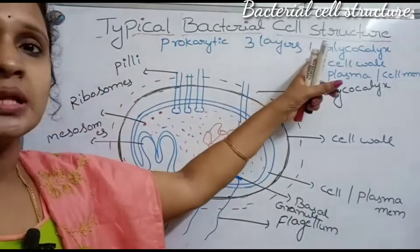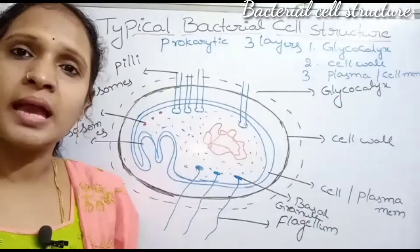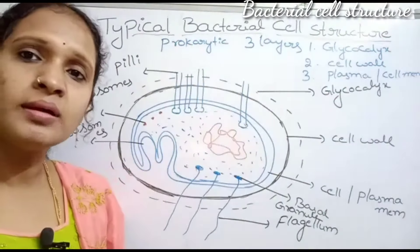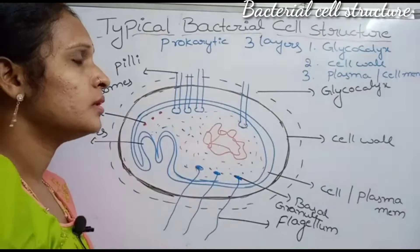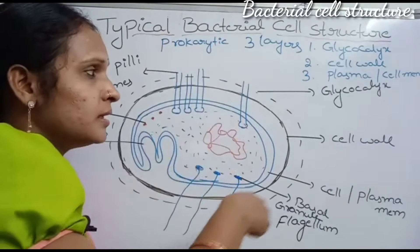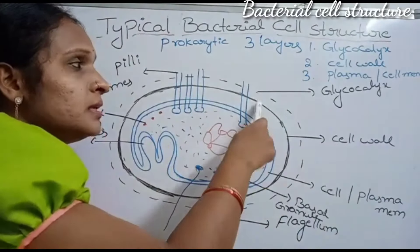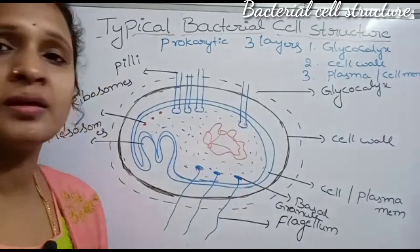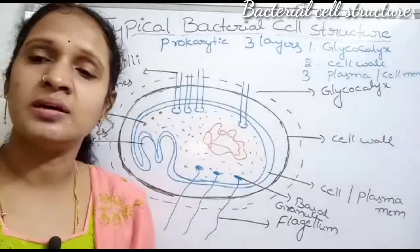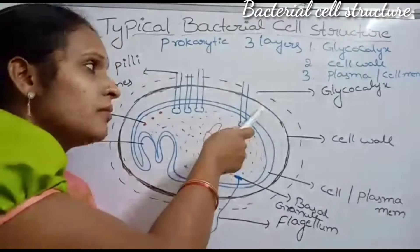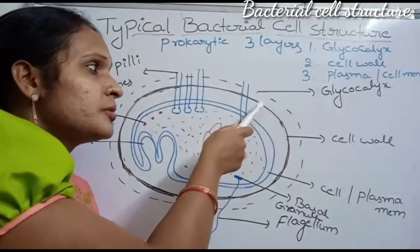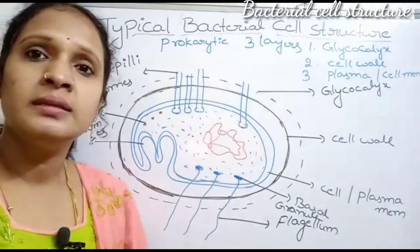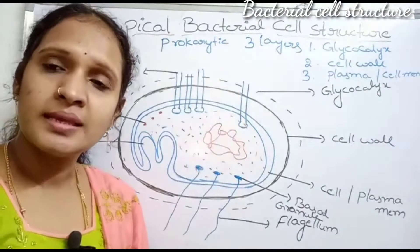The first layer we will see is the glycocalyx. Glycocalyx is the outermost layer of the bacterial cell. It is external to the cell wall. The function of the glycocalyx is the protection of the cell wall.